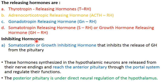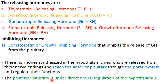The next group of hypothalamic hormones are inhibiting hormones, which inhibit secretions from the pituitary gland. The one listed in the NCERT book is somatostatin, or growth hormone inhibiting hormone, which inhibits the release of GH from the pituitary. These hormones are synthesized in hypothalamic neurons, released from their nerve endings, and reach the anterior pituitary through the portal system. However, the posterior pituitary receives neurons directly from the hypothalamus — oxytocin and ADH are synthesized there and sent via long axons to the posterior pituitary for storage.